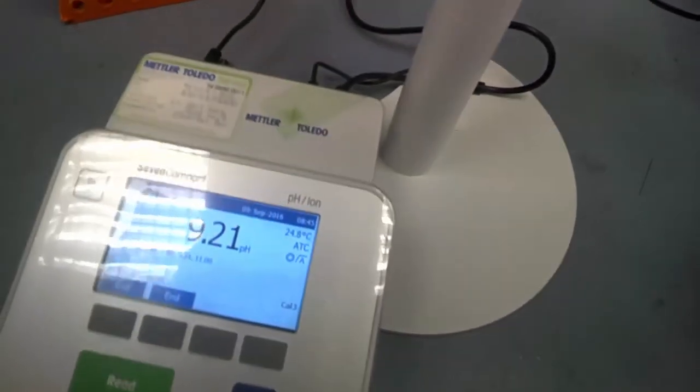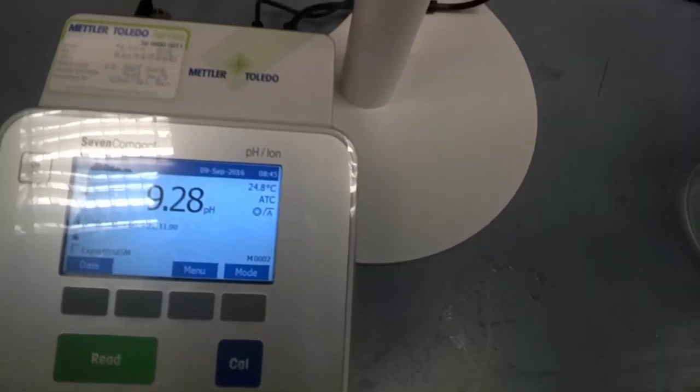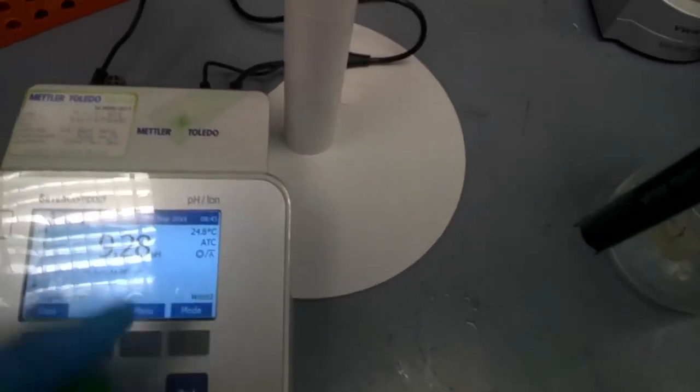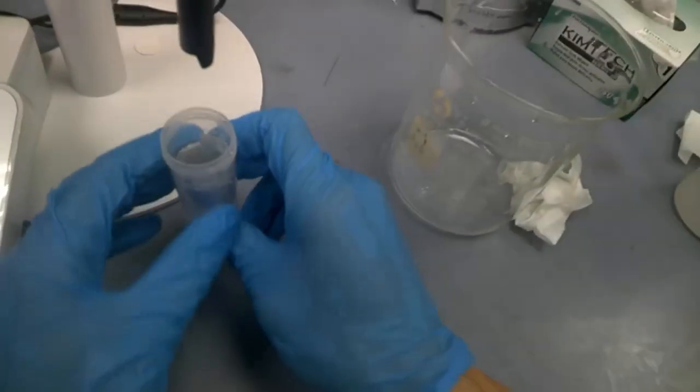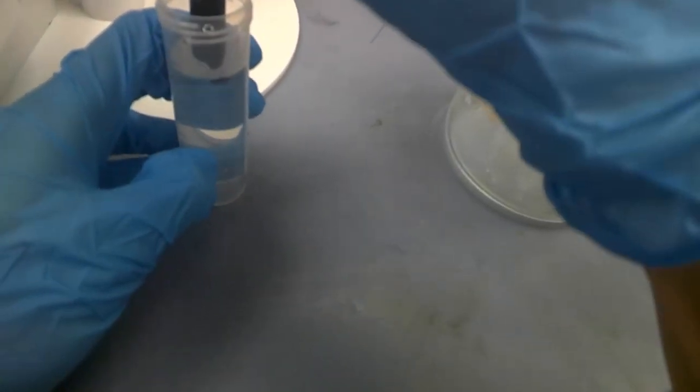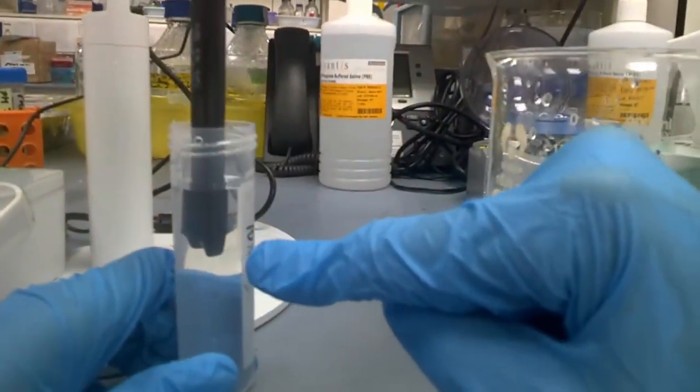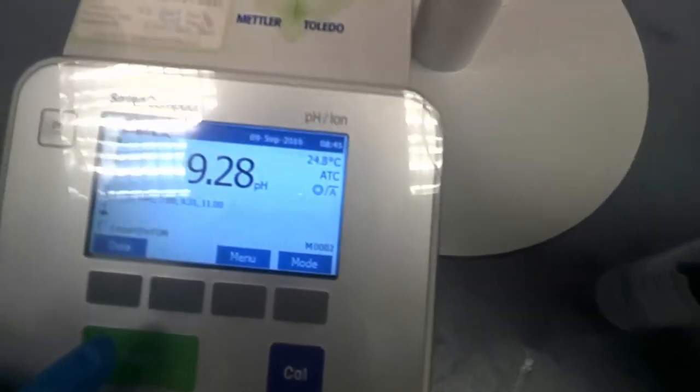So this is all done. We click exit. Again, note the temperature change. Just now it was 24.9. Now it's 24.8. This is my unknown solution. I'm going to place my pH probe inside there. Make sure the liquid doesn't spill over. It doesn't flow over. And then, once I'm ready, I'll click Read. This button here in green. Read.